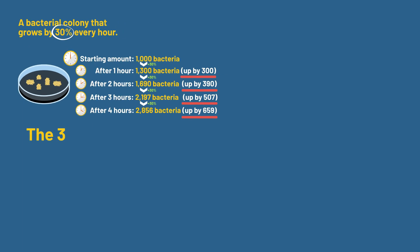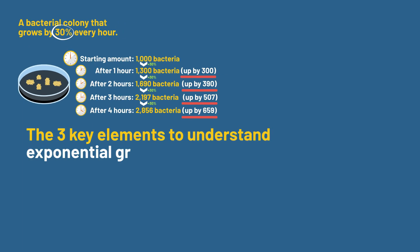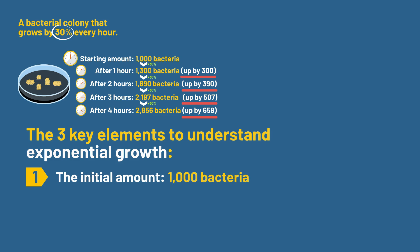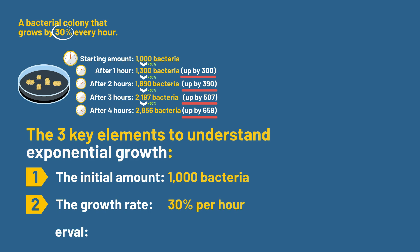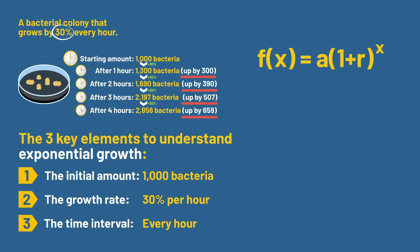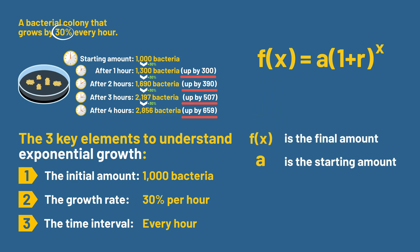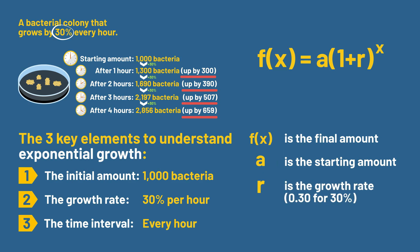This reveals the three key elements to understand exponential growth: the initial amount — our 1,000 bacteria; the growth rate — 30% per hour; and the time interval — every hour. The mathematical formula looks like this: F(x) is the final amount, A is the starting amount, R is the growth rate (0.30 for 30%), and X is the number of time periods.